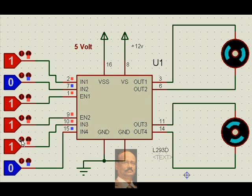Now if I want to make them go in reverse direction, I make this 0, and so both motors rotate in the other direction.